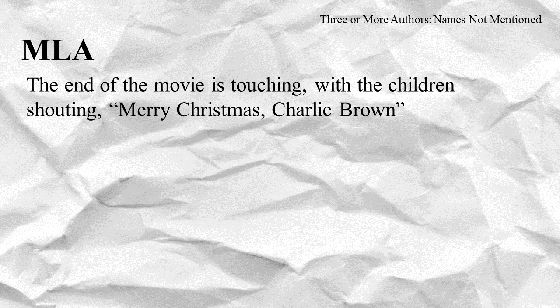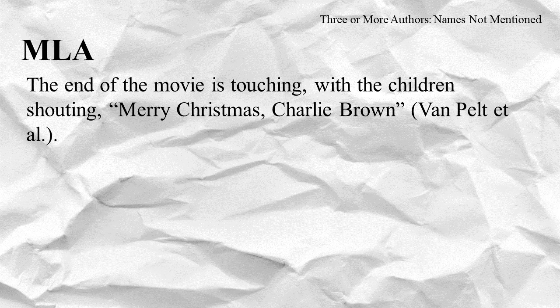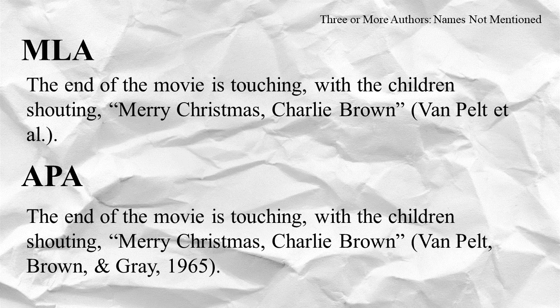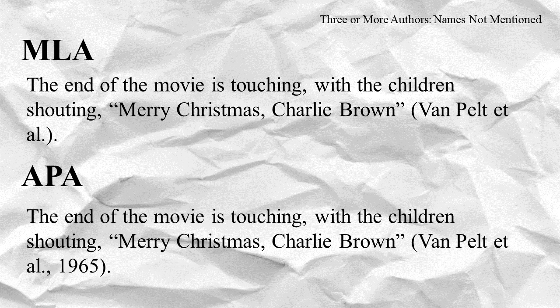Once you have three or more authors, in MLA you only list the first one, followed by the abbreviation "et al." In APA, you list all the authors for the first citation, no matter how many there are. In all citations after that, you only list the first one with the same "et al." abbreviation. Everything else is the same.